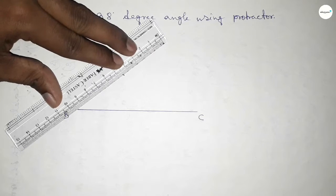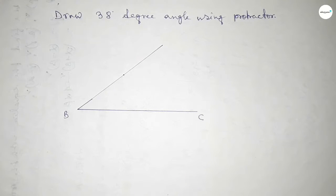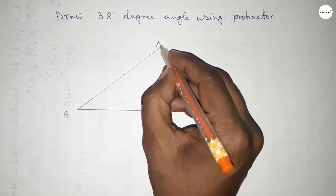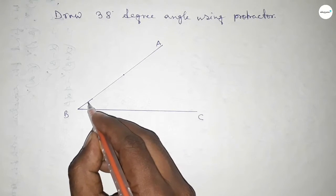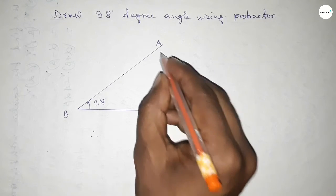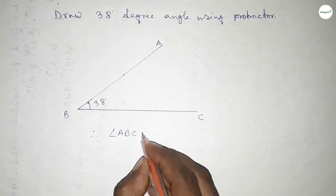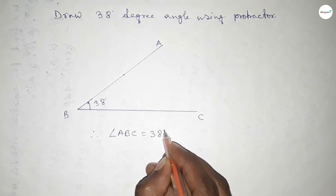By joining this we got 38 degree angle. Taking a point A here, angle ABC is 38 degree angle. Therefore, angle ABC equals 38 degrees.